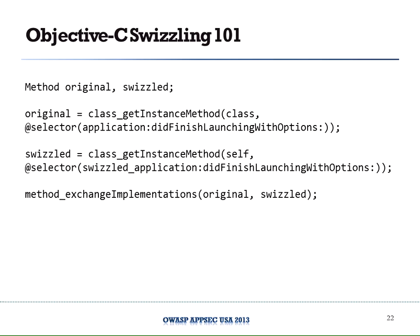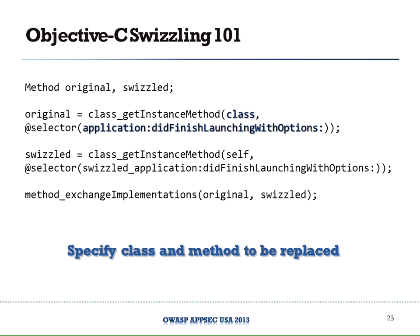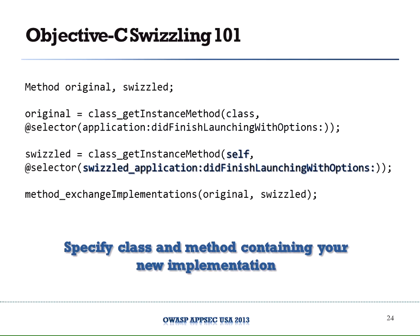Swizzling is as easy as three function calls. First, you call class_getInstanceMethod with the object and method you want to replace. Then you specify the replacement method you've created. Finally, you call method_exchangeImplementations, which swaps the implementations — so when the app executes the original method, it's actually executing your code instead. And when your code wants to run the original, it just calls itself, which runs the original behind the scenes. This allows you to inject right before the original method and call the original so the app doesn't break.